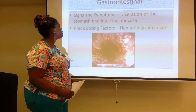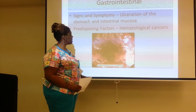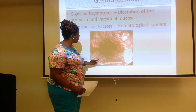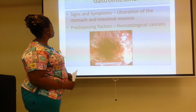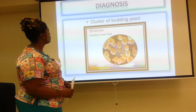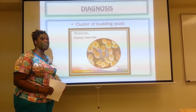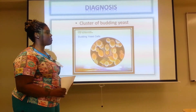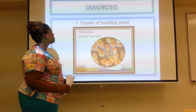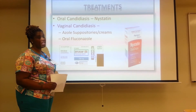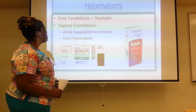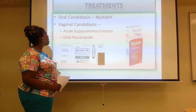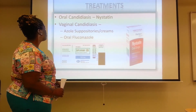Gastrointestinal candidiasis presents with ulceration of the stomach and intestinal mucosa. As seen in the pictures, the lining of the esophagus shows budding yeast on the surrounding areas. The predisposing factor is hematological cancer. Diagnosis involves testing clusters of budding yeast — taking samples from the tongue or vaginal discharge to identify candidiasis. Treatment includes Nystatin, which comes in oral drops or tablets; azole suppositories or creams for vaginal candidiasis; or oral fluconazole.